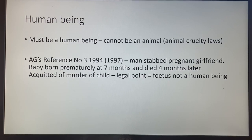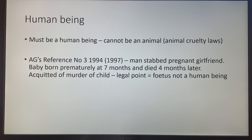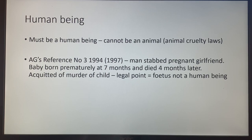In terms of 'a human being,' you'd think this was fairly simple, but there are complications. It has to be a human being — an animal is not covered under murder. The question of when someone becomes a human being arose in AG's Reference No. 3 of 1994. A man stabbed his pregnant girlfriend; the baby was born prematurely at seven months and died four months later. He was acquitted of the baby's murder because the court said a fetus is not a human being.